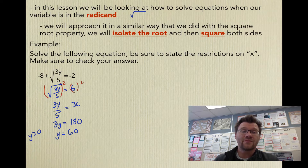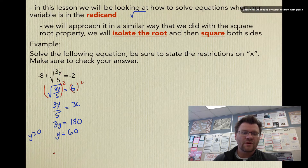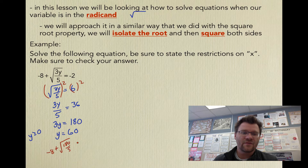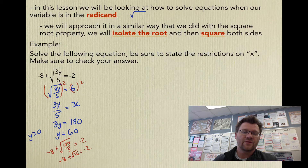Now we need to check our answer. We take 60 and plug it back in: negative 8 plus the square root of 180 divided by 5 should equal negative 2. 180 divided by 5 is 36, so we get negative 8 plus the square root of 36, which is positive 6. So negative 8 plus 6 does equal negative 2 — it checks.